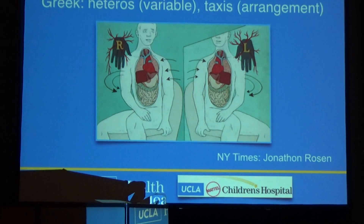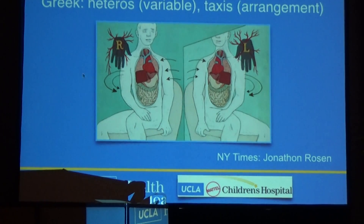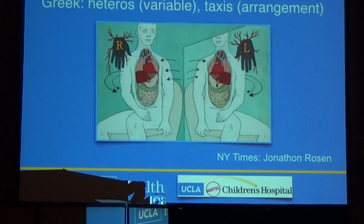So what is the definition of heterotaxy? Heterotaxy comes from the Greek. Heteros means variable and taxis means arrangement — so a variable arrangement of structures that have right-left asymmetry. This is a nice little picture that appeared in the New York Times showing some of the abnormalities below the diaphragm and above the diaphragm that we see with heterotaxy.